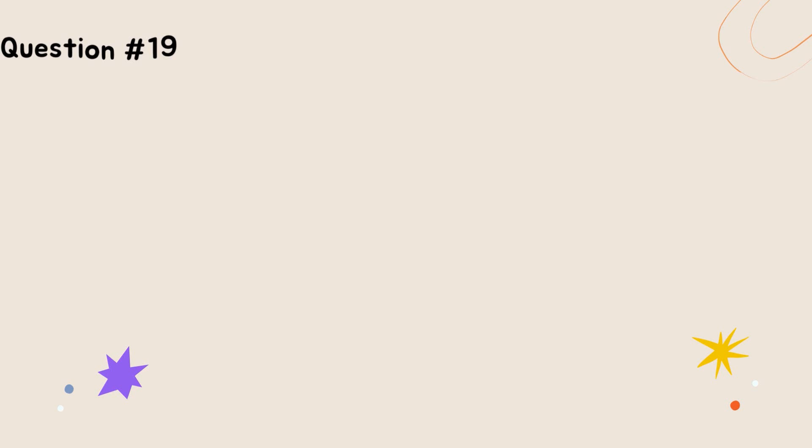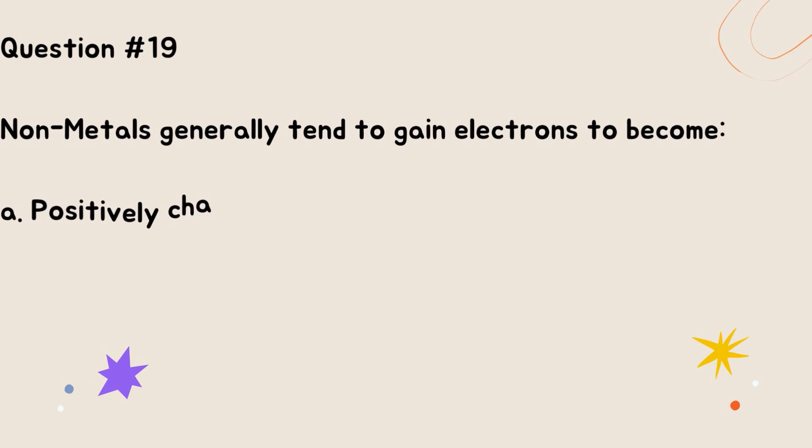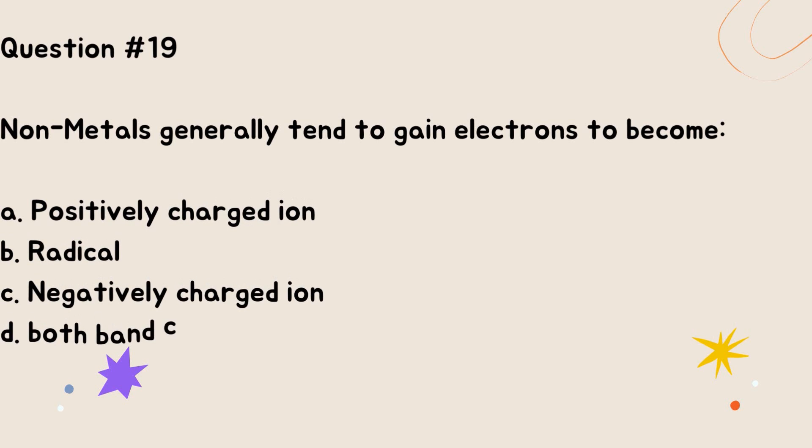Question number 19. Nonmetals generally tend to gain electrons to become: A. Positively charged ion. B. Radical. C. Negatively charged ion. D. Both B and C. Correct option is D.